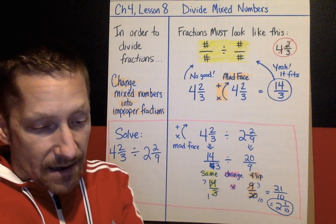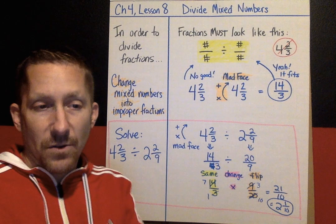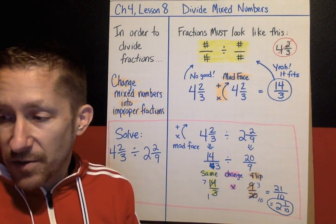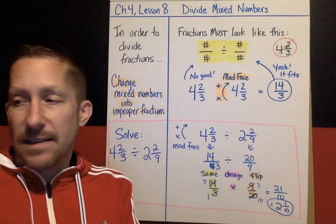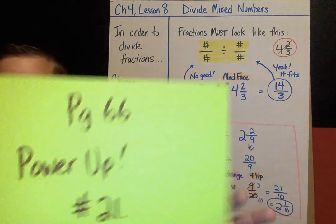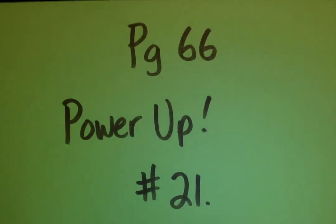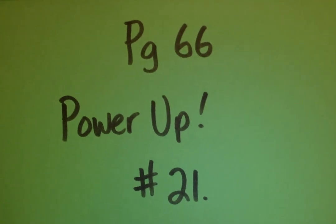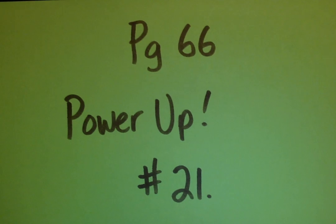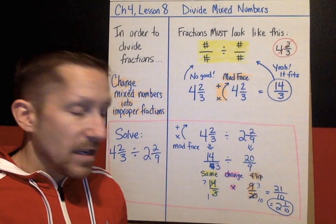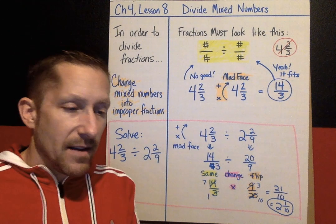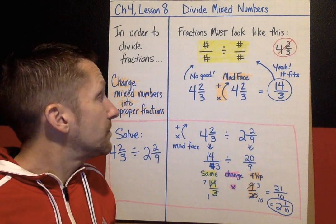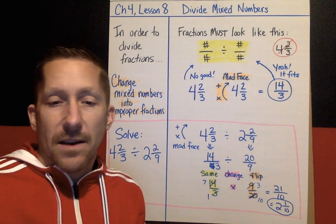That's it for Lesson 8 — this is the last lesson of Chapter 4. After the review, we'll be taking the Chapter 4 test real soon. The hidden treasure for this lesson is in your workbook: go back to page 66 and look at the power-up question number 21. If you can explain it during the next lesson, you could win some hidden treasure. Good luck — I hope you make it. I'll see you next time, and next time we'll be moving on to Chapter 5.